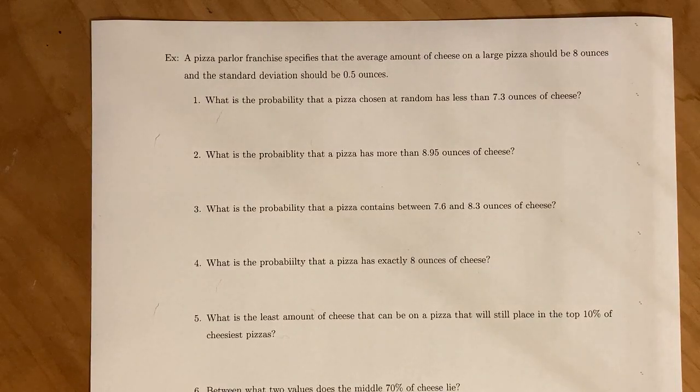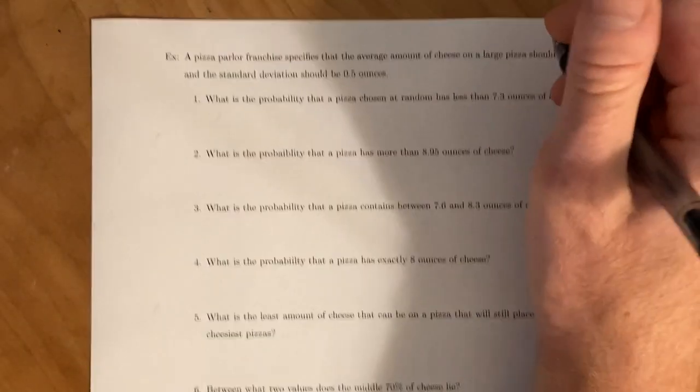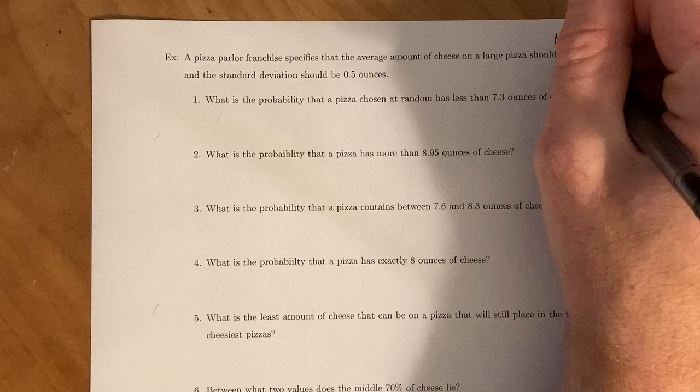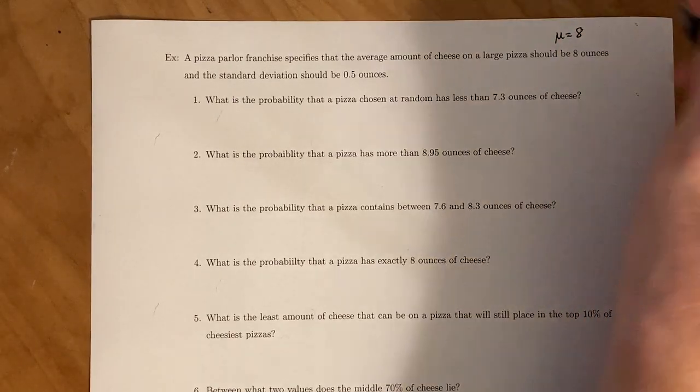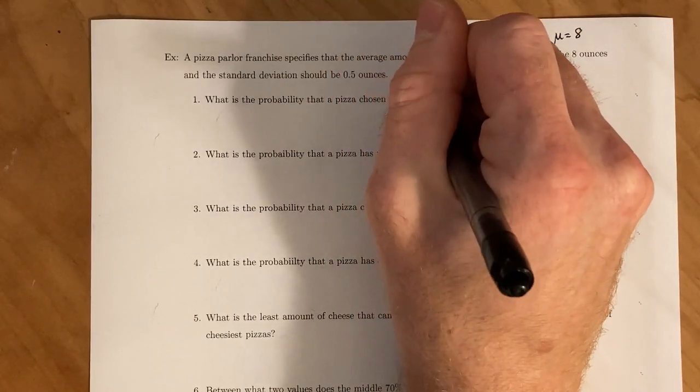For this final example, we're talking about a pizza parlor franchise. It specifies that the average amount of cheese on a large pizza should be 8 ounces with a standard deviation of 0.5 ounces. So our mu, which is our average, is 8 and our standard deviation is 0.5.